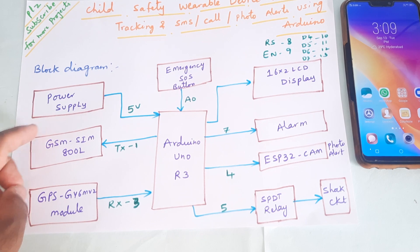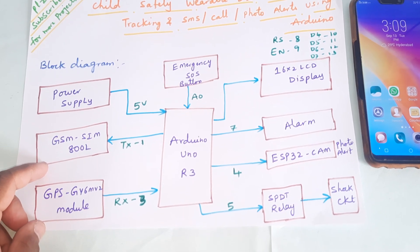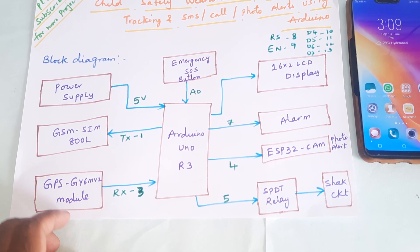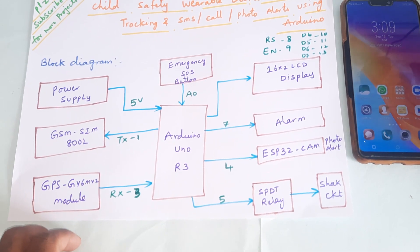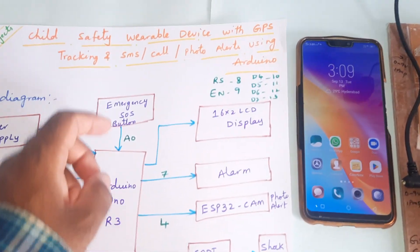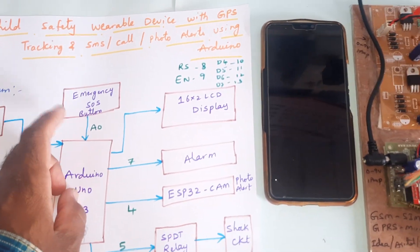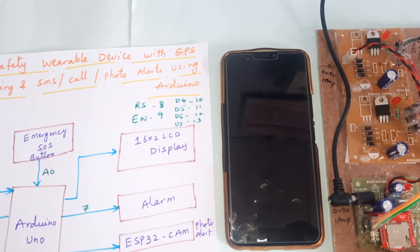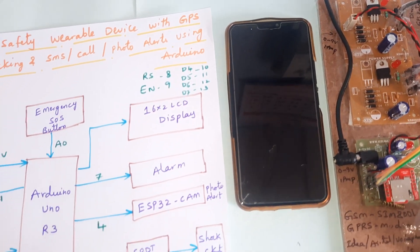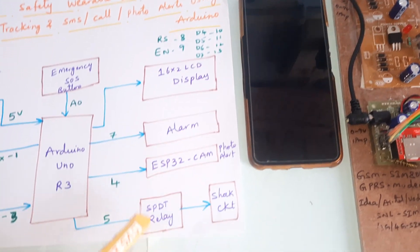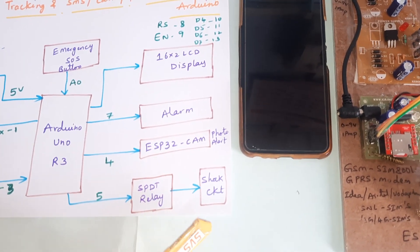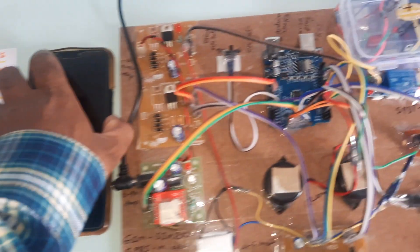Here we are using a power supply module, GSM SIM800L for SMS alert and call alert, GPS GY-6M V2 module to track the exact GPS location, Arduino UNO R3, an emergency SOS button, a 16x2 LCD display with pins RS, EN, D4, D5, D6, D7, an alarm, and an ESP32 camera to send photo alerts on the Telegram app.